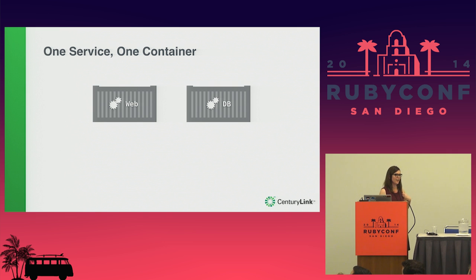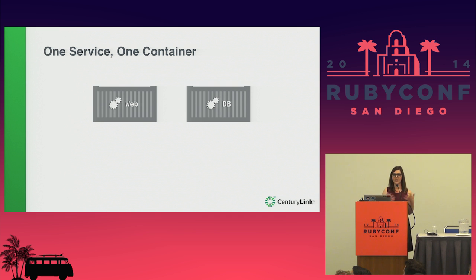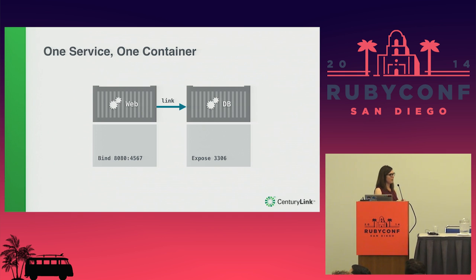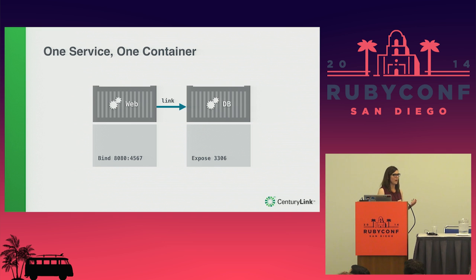We have a nice illustration of one service per container — a simple application with a web framework and a database behind it. You might ask: a container is isolated, so how does container one know container two exists, and how can they exchange information? The answer: there are a few ways. You can link them using a Docker link, or more commonly use some combination of port mapping and environment variables, depending on what requirements your services have.